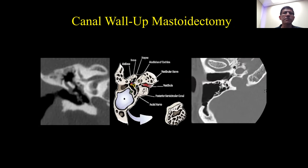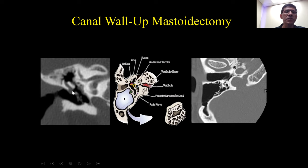The classic procedure performed for a cholesteatoma is referred to as a canal wall up mastoidectomy, and this is usually performed for early cholesteatomas.